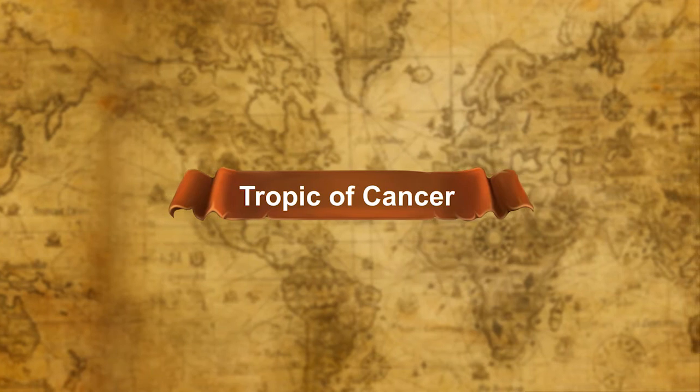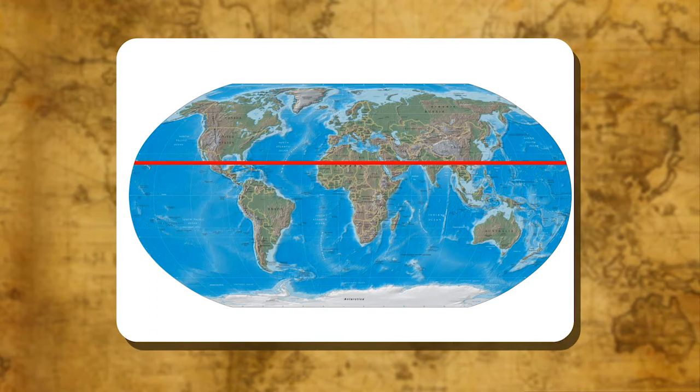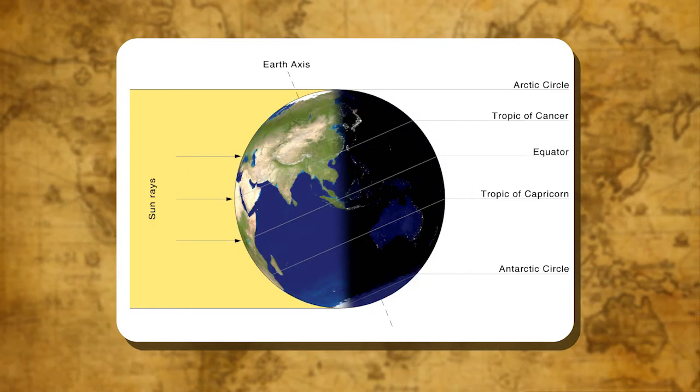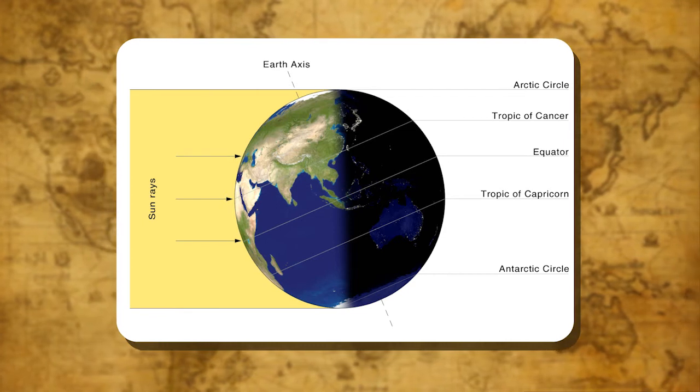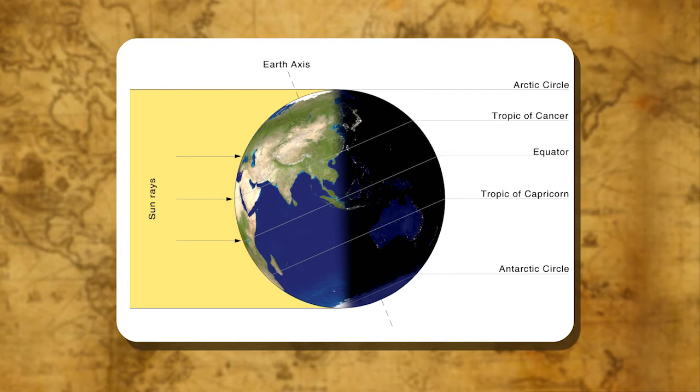Tropic of Cancer: In the northern hemisphere, the parallel of 23 and a half degrees north is called the Tropic of Cancer. It marks the limit of that portion of the earth where the sun's rays fall vertically on June 21st.